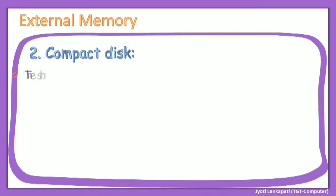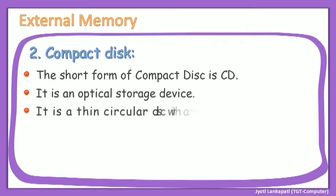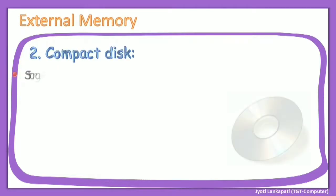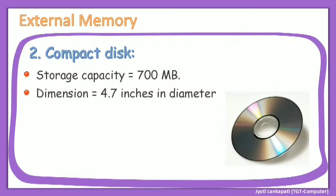Now let's see the second one: compact disk. The short form of compact disk is CD. It is an optical storage device — a thin circular disk with a reflective metal coating. It can hold text, graphics, sound, images, and video. The storage capacity of a CD is 700 MB, and its dimension is 4.7 inches in diameter.